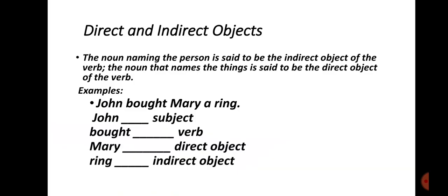Direct and Indirect Object. The noun naming the person is said to be the indirect object of the verb. The noun that names the thing is said to be the direct object of the verb. Example: 'John bought Mary a ring.' Here, John is the subject, 'bought' is the verb, Mary is the indirect object, and 'ring' is the direct object. Mary and ring are both objects of the verb 'bought'.